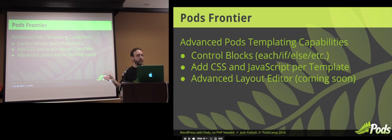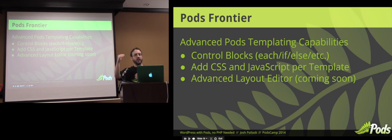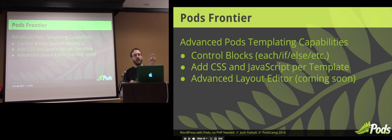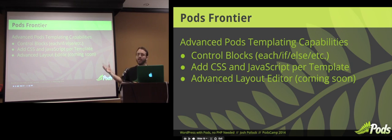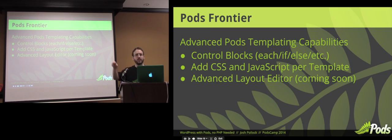Each, if, else — these basic things that go into making a programming language — we make these very easy. When you have a related field with multiple values, we can use each to loop through each item. Or we can say: I want to show the label and the field value. But what if there isn't a field value? I'd have a label and nothing — that looks bad. So we can say if we have this field, then show the label. Pods Frontier also has a tab to add special CSS or JavaScript just for that one template.